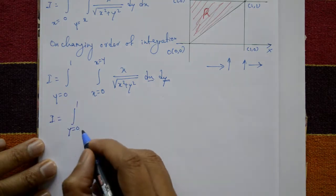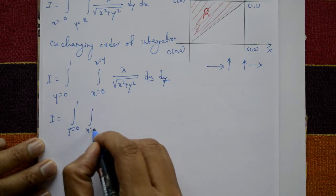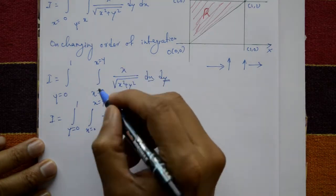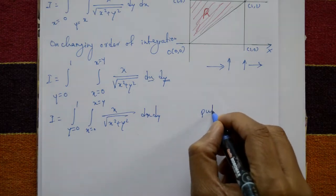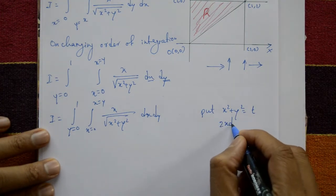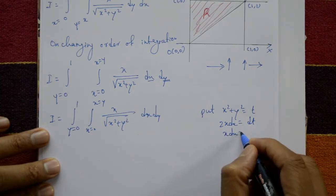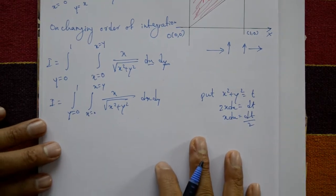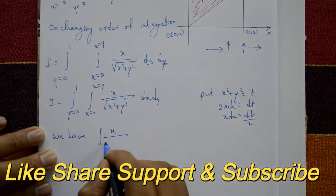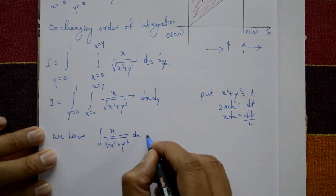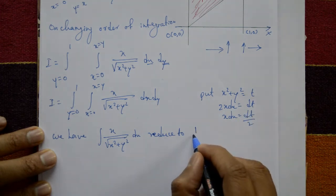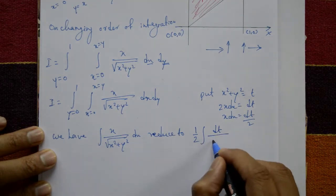Now I equals integration of y from 0 to 1. The inner integral of x upon square root of x squared plus y squared dx is not straightforward, so we use substitution. Let x squared plus y squared = t, then differentiating with respect to x: 2x dx = dt, so x dx = dt/2. Therefore the integral of x upon square root of x squared plus y squared dx reduces to (1/2) integral of dt upon square root of t.